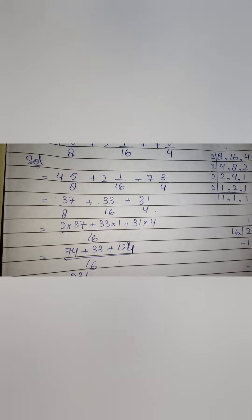Hum ne in sab ko plus kiya to hamare paas aaya two thirty-one upon sixteen. Ab two thirty-one ko sixteen se divide karwaenge. Sixteen × 1 = 16, minus = 71 remaining. Sixteen × 4 = 64, minus kiye to seven bacha hamare paas. To hamara answer ho gaya fourteen whole seven upon sixteen.